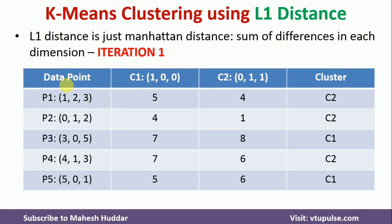The first column in this table represents the data point. The second column represents the distance from centroid C1 to all data points. The third column represents the distance from centroid C2 to all data points. The last column represents the cluster to which each particular data point belongs.